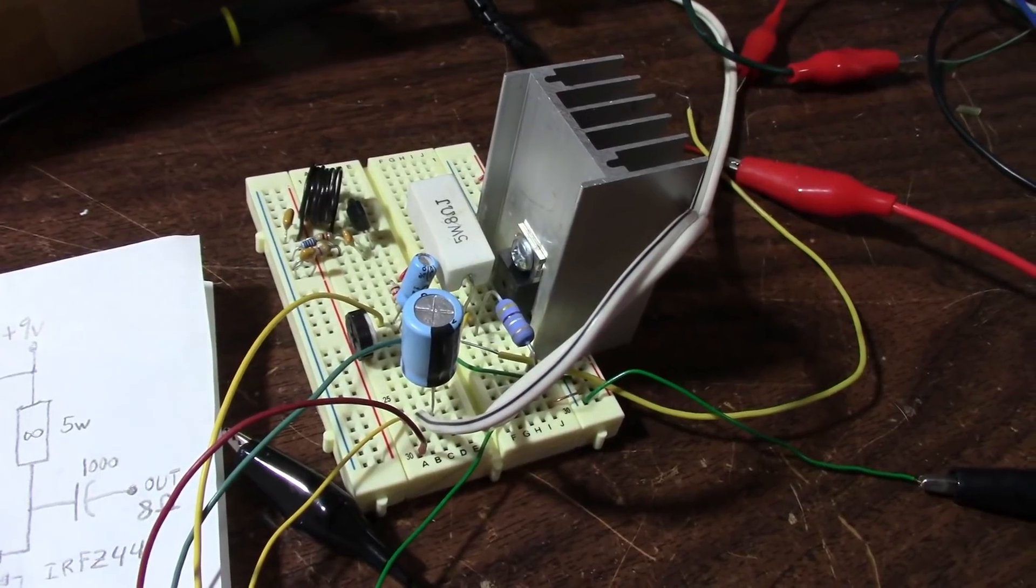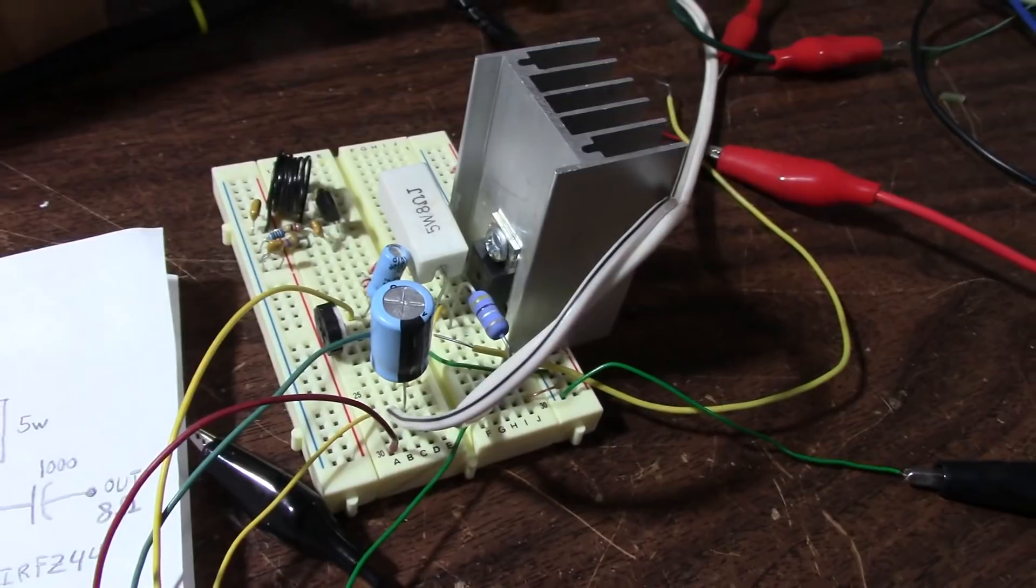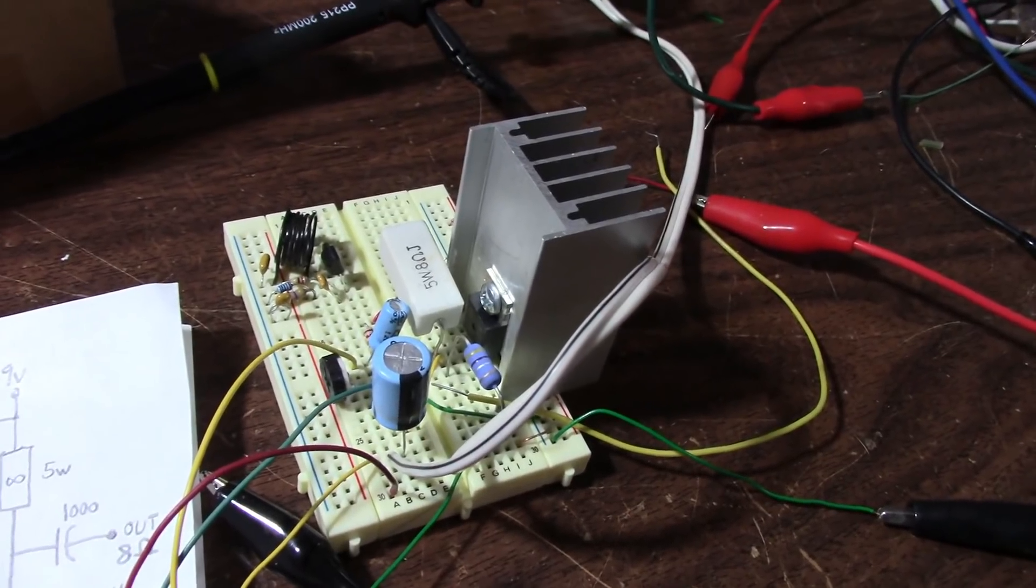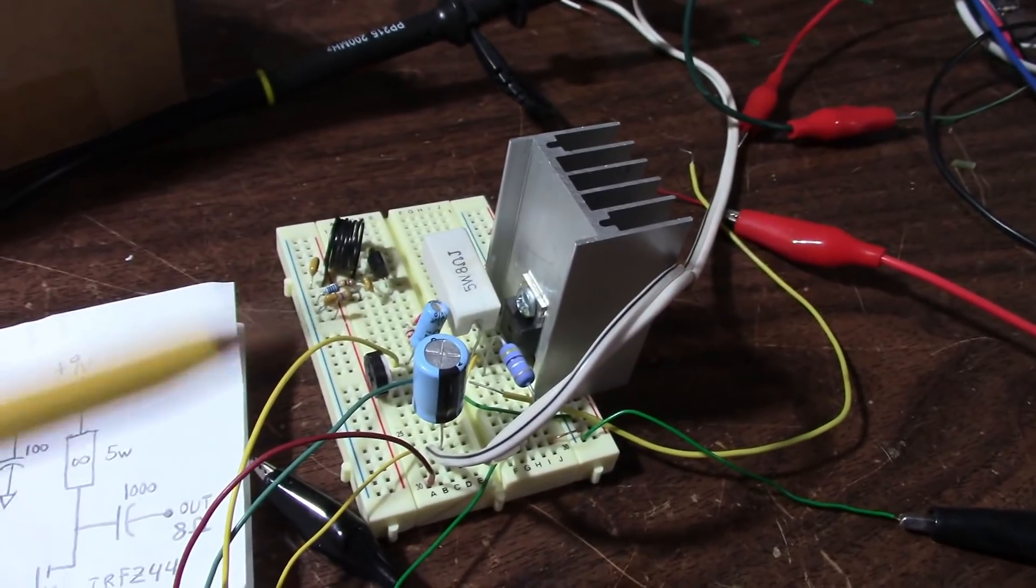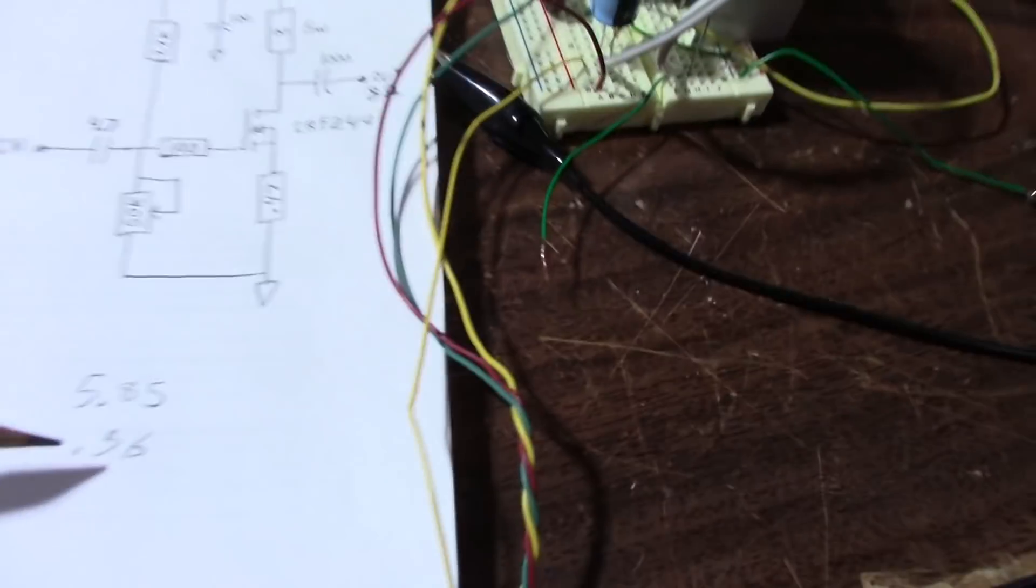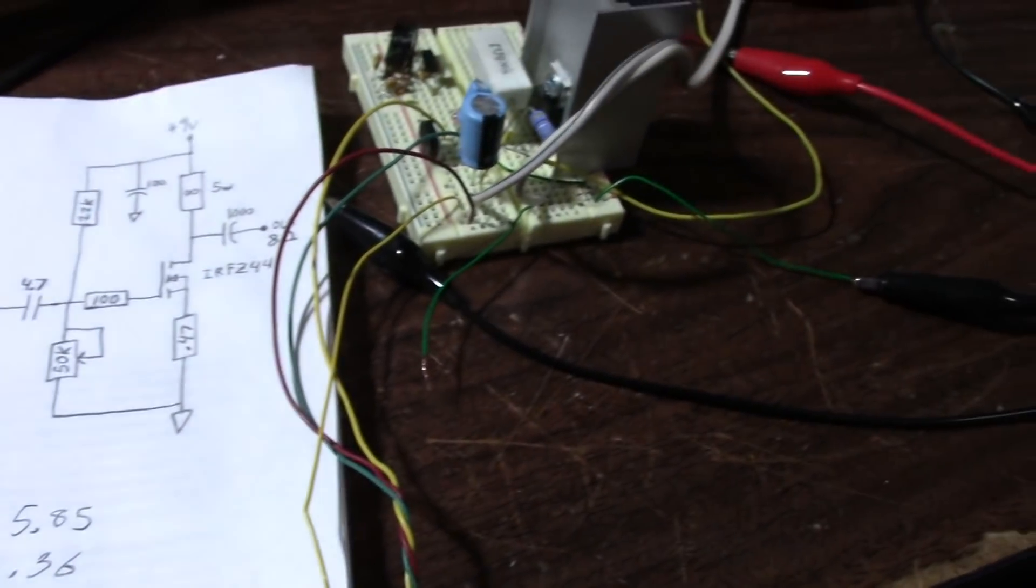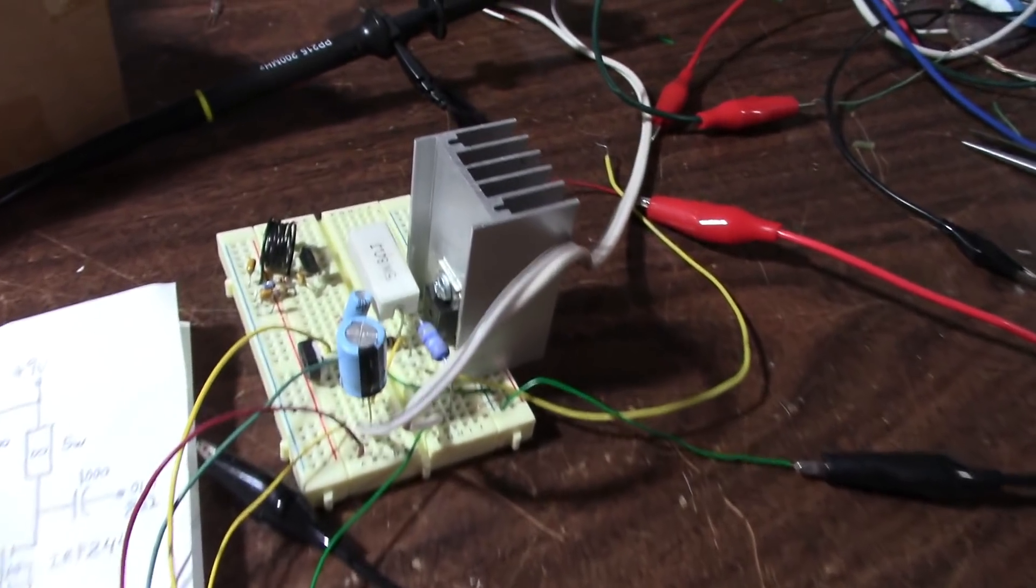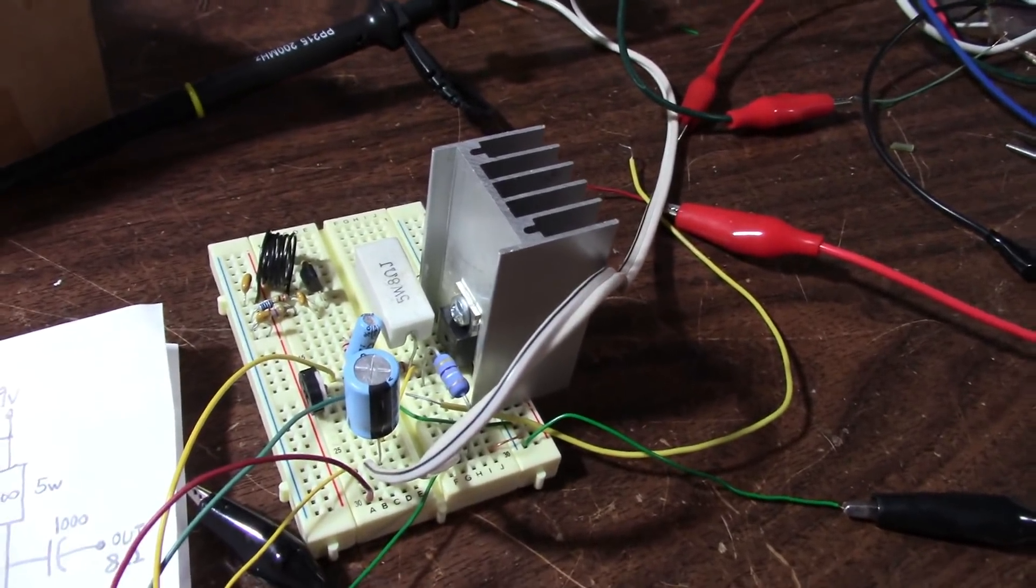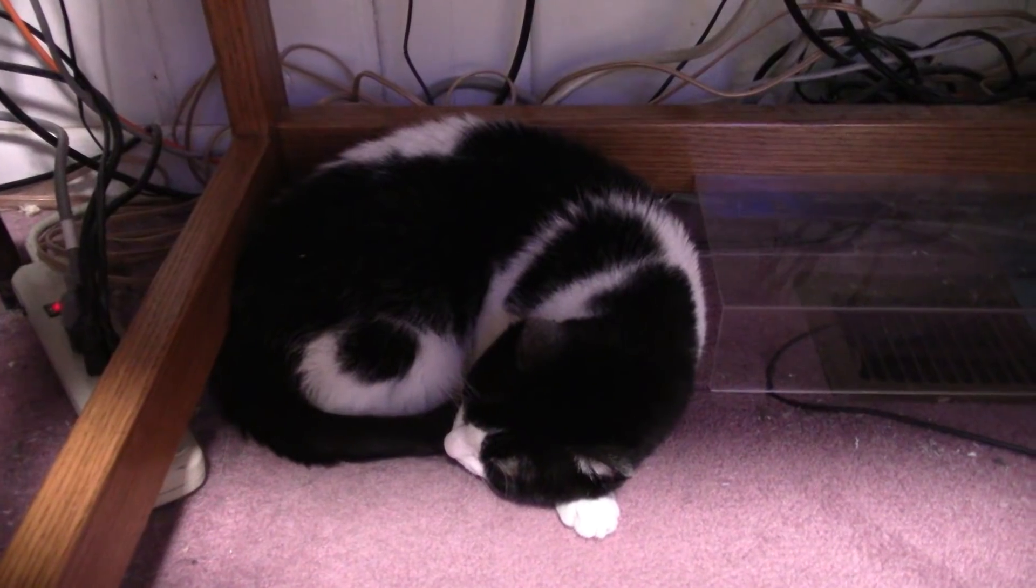So there you have it. A little class A amplifier you can build on the breadboard. Nothing fancy. Not a lot of output. Not a lot of efficiency. We input almost six watts, about five point eight five. And we get out point three six. So that's like around six percent efficient. Pretty terrible as far as efficiency goes. But you know, that's what you get.